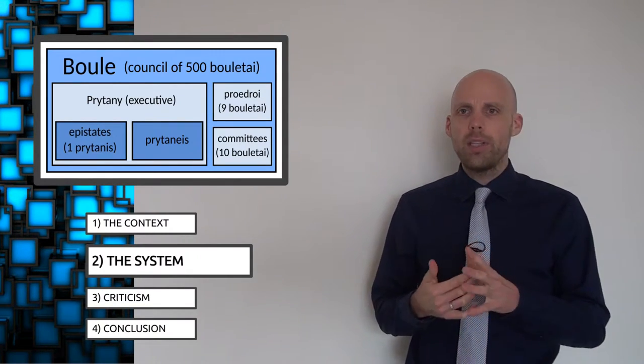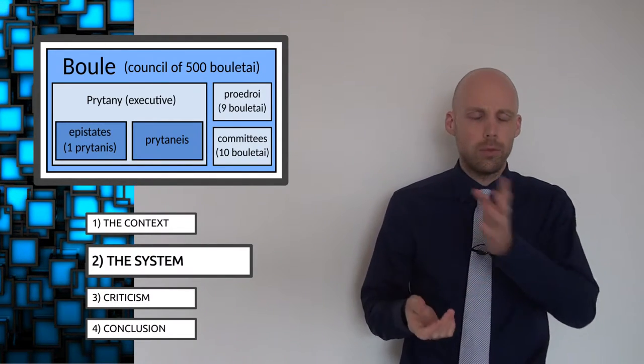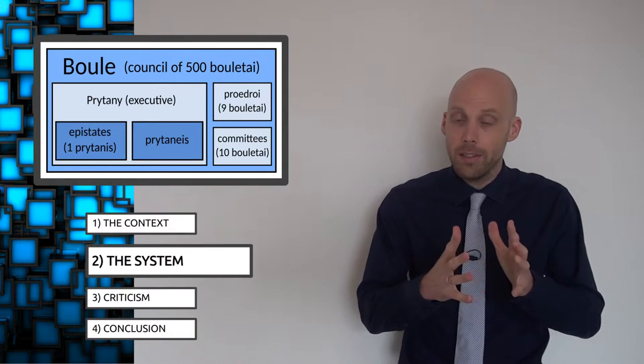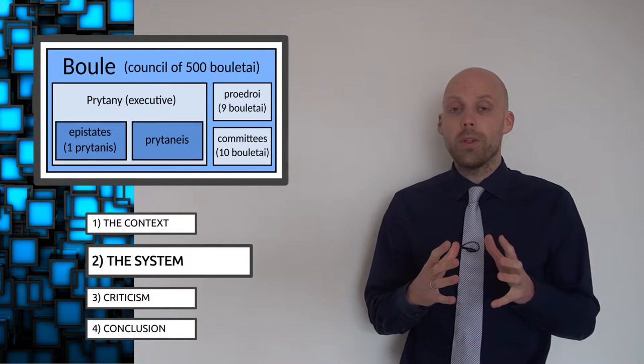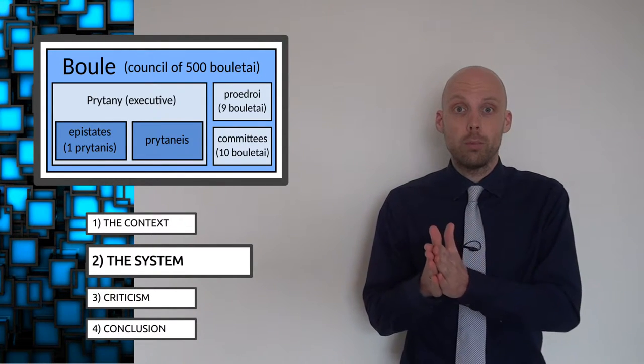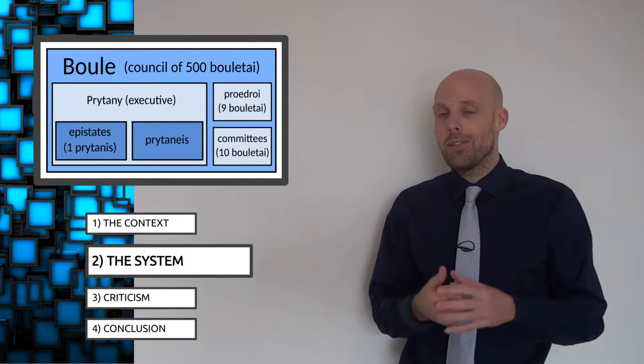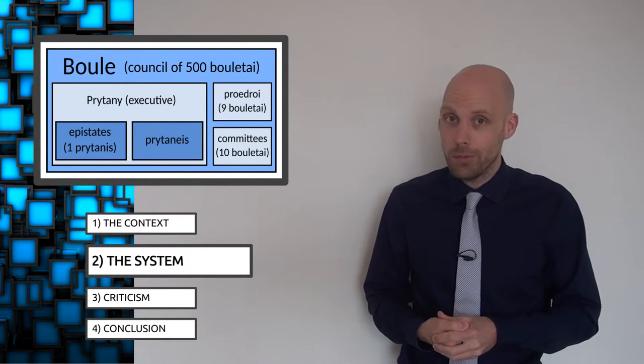The boule consisted of different subsections and committees that dealt with specific topics, none of which is particularly interesting. But the executive power was concentrated with the 50 Pritanees who formed a standing committee for a term of 36 days. And for those of you who just did the math, yes, the ancient Athenians thought a year had 360 days.